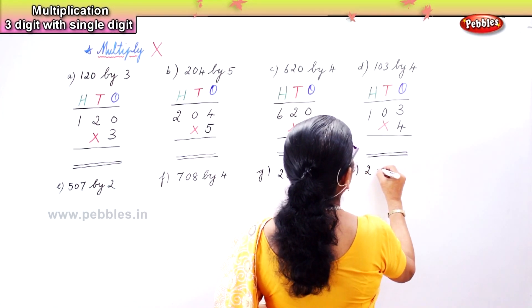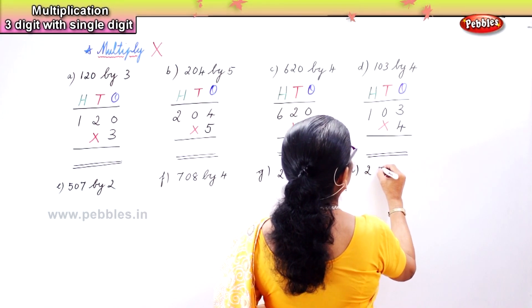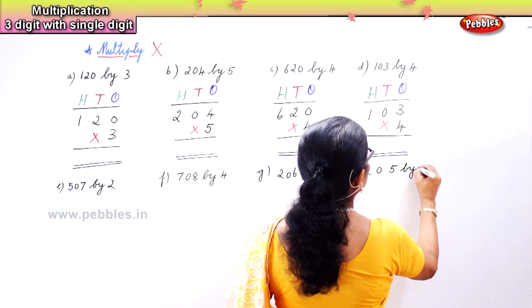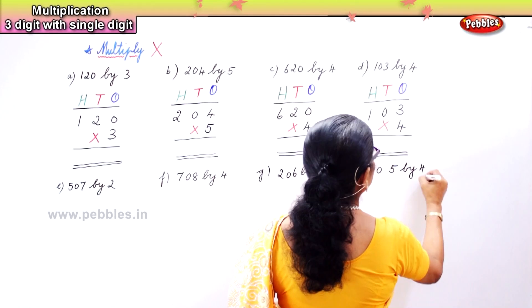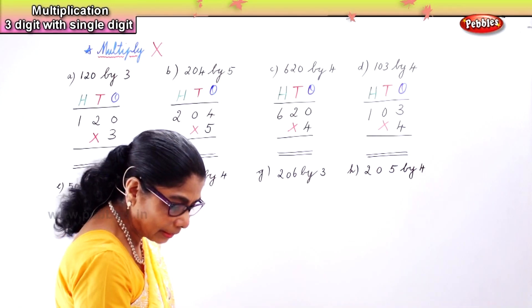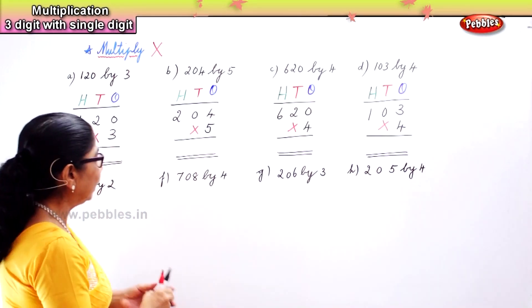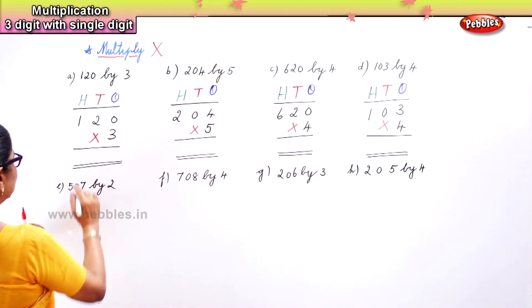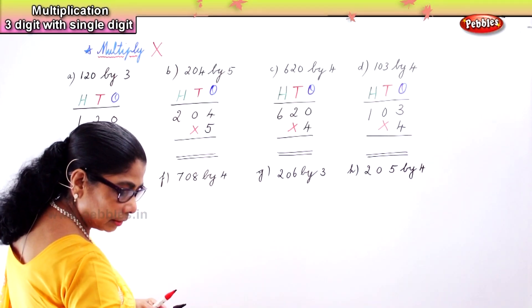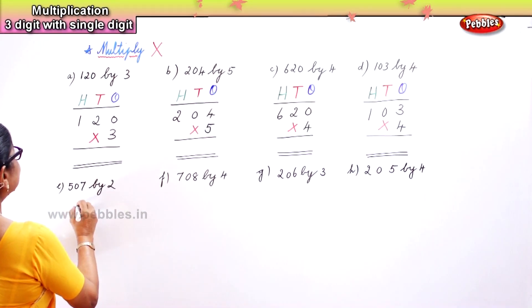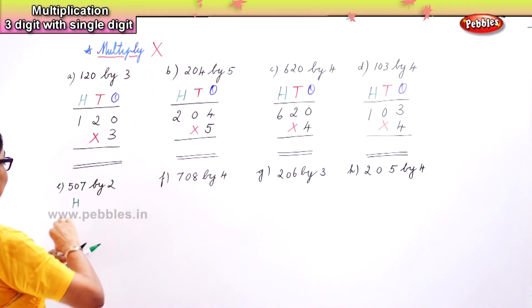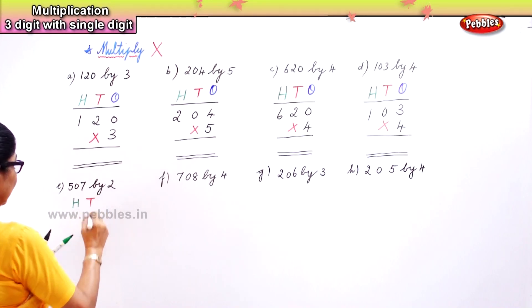Two hundred and five by 4. Now again, let's put down the numbers correctly. In the hundreds place — let's write: hundreds, tens, and ones.